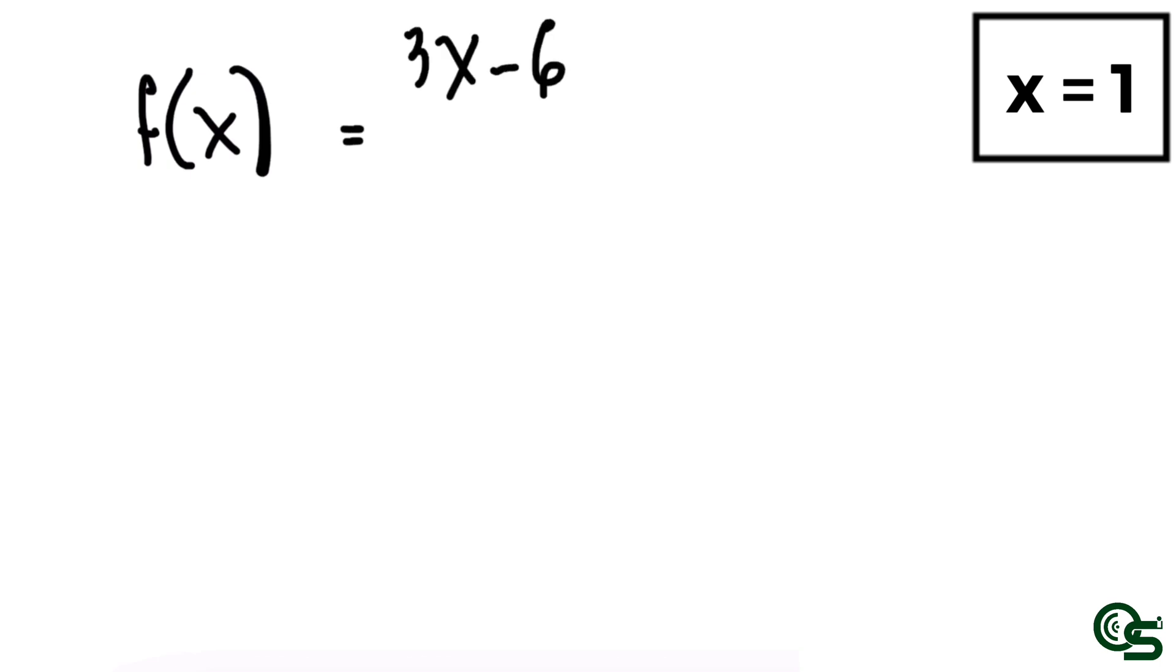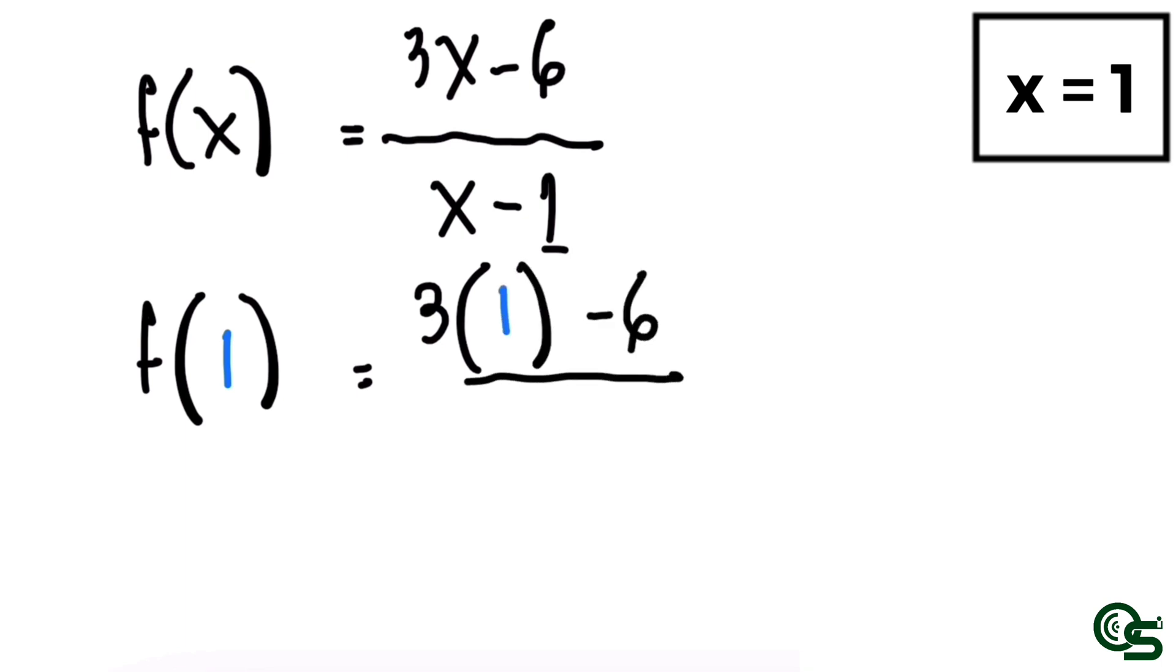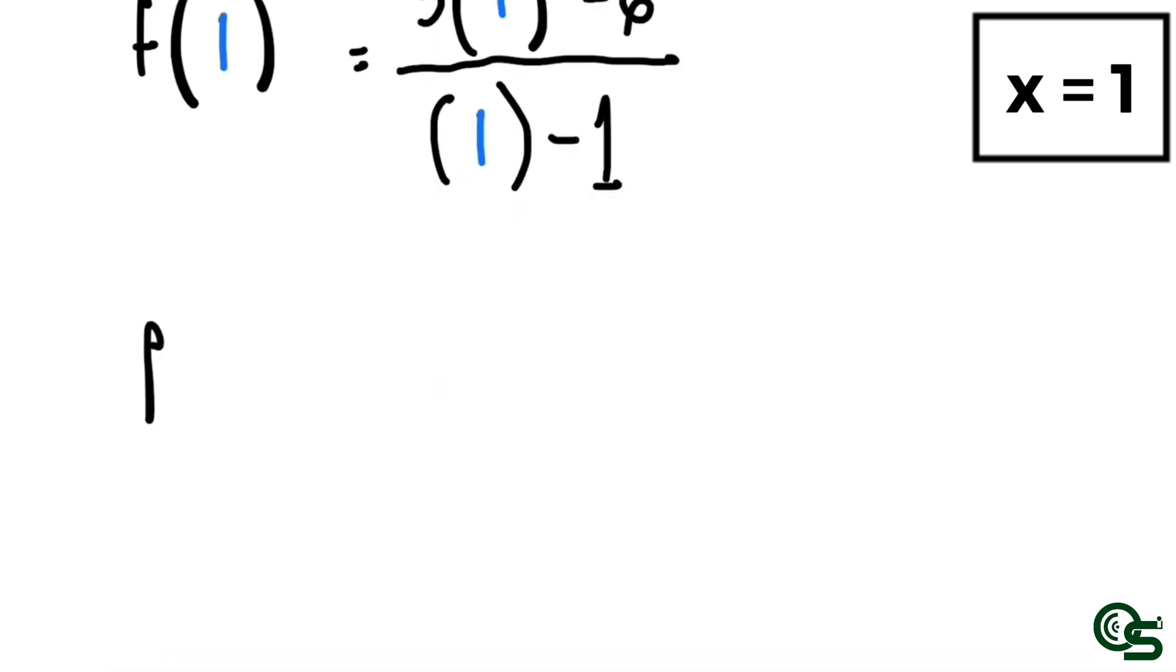We will replace every x in the equation with 1. It will become f(1) is equal to 3 times 1 minus 6 all over 1 minus 1. Then f(1) is equal to 3 minus 6 all over 0.